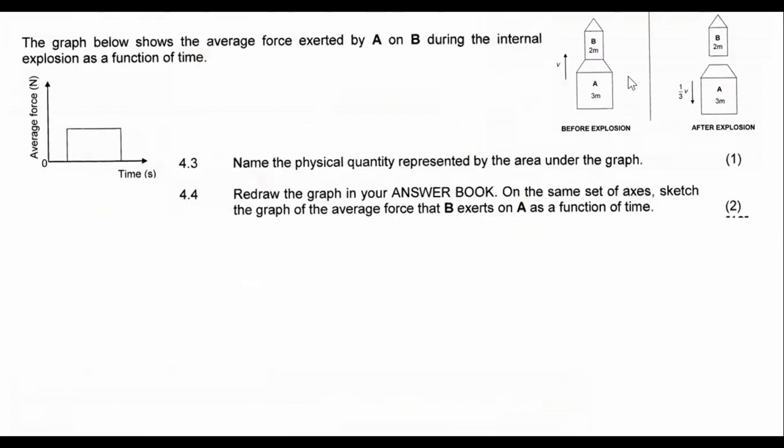The graph below shows the average force exerted by A on B during the explosion. So you can imagine that these two things over here, A and B, they are going to cause some type of force on each other. So A is going to push B up and B is going to push A down obviously.